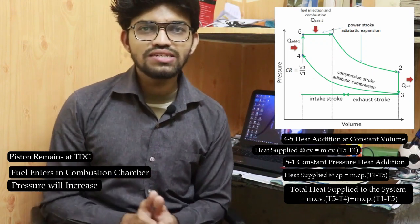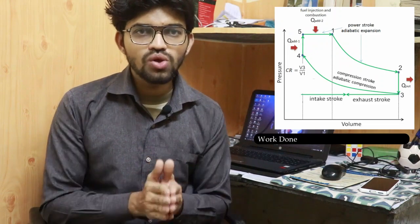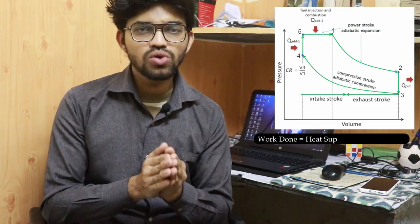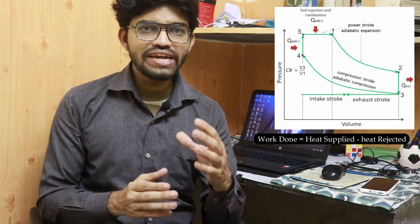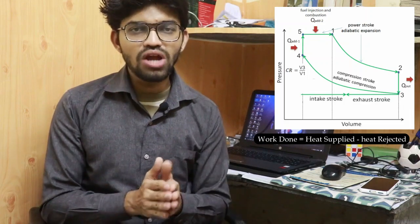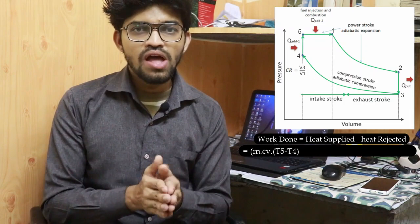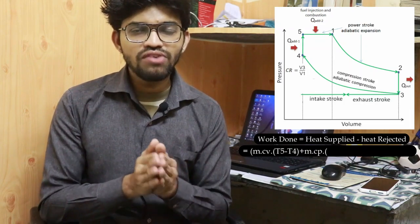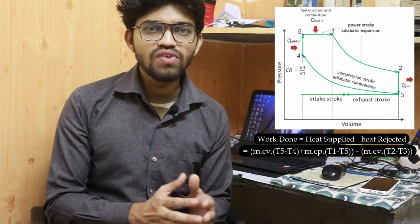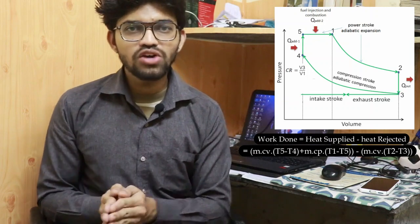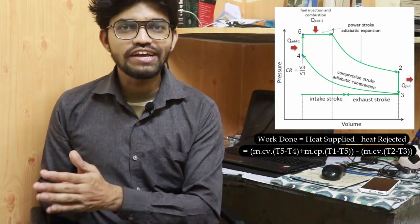Now let's look at the work done of the system. Work done equals total heat supplied minus heat rejected. Using the formulas we have derived, work done = [m × Cv × (T5 − T4) + m × Cp × (T1 − T5)] − m × Cv × (T2 − T3). This is the total formula to calculate the work done during the dual cycle.